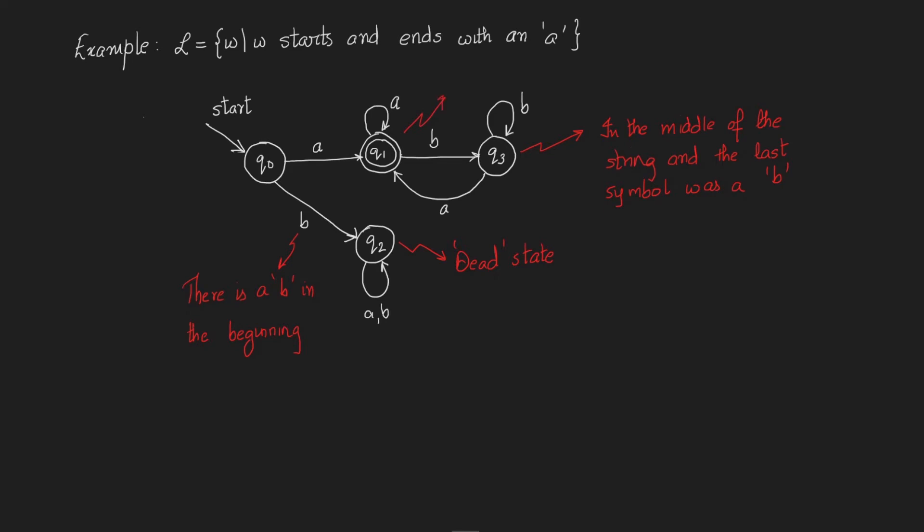q1, here being the final state, indicates that on termination, when the string terminates, if you find yourself in q1, then the string can be accepted. Whereas if you find yourself in any other state—q0, q2, or q3—this would be an indication that the string is rejected and does not belong to L.